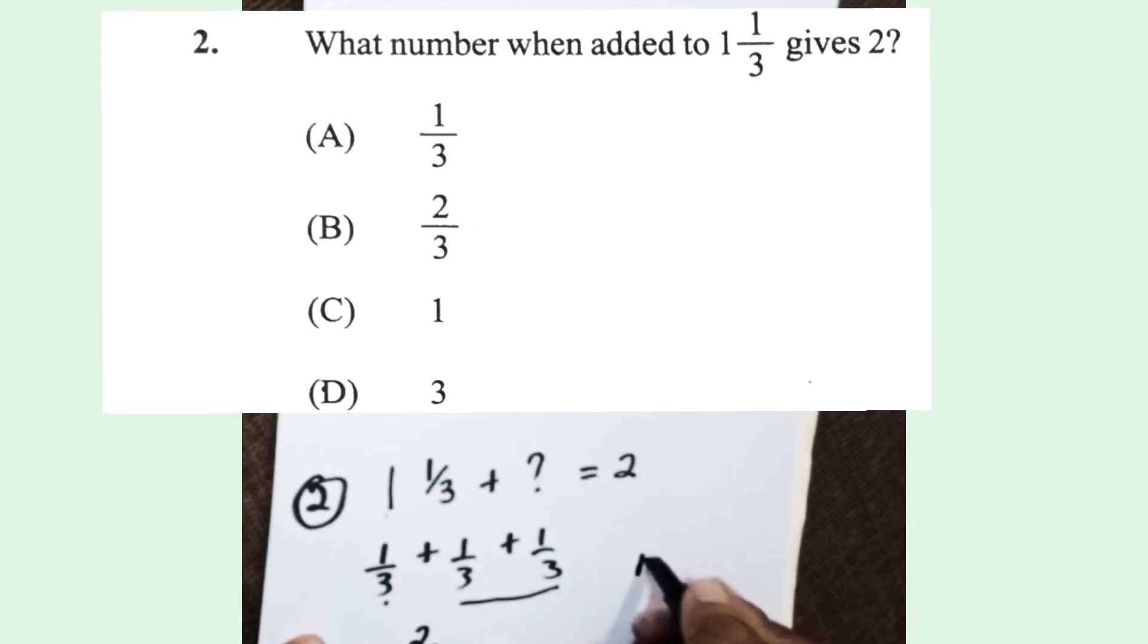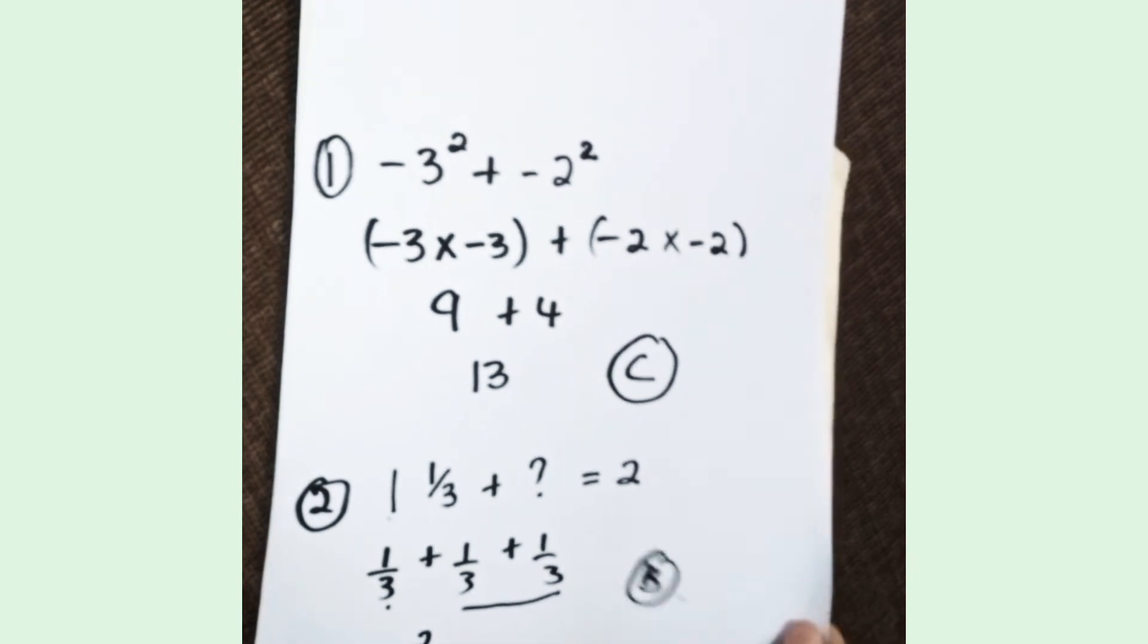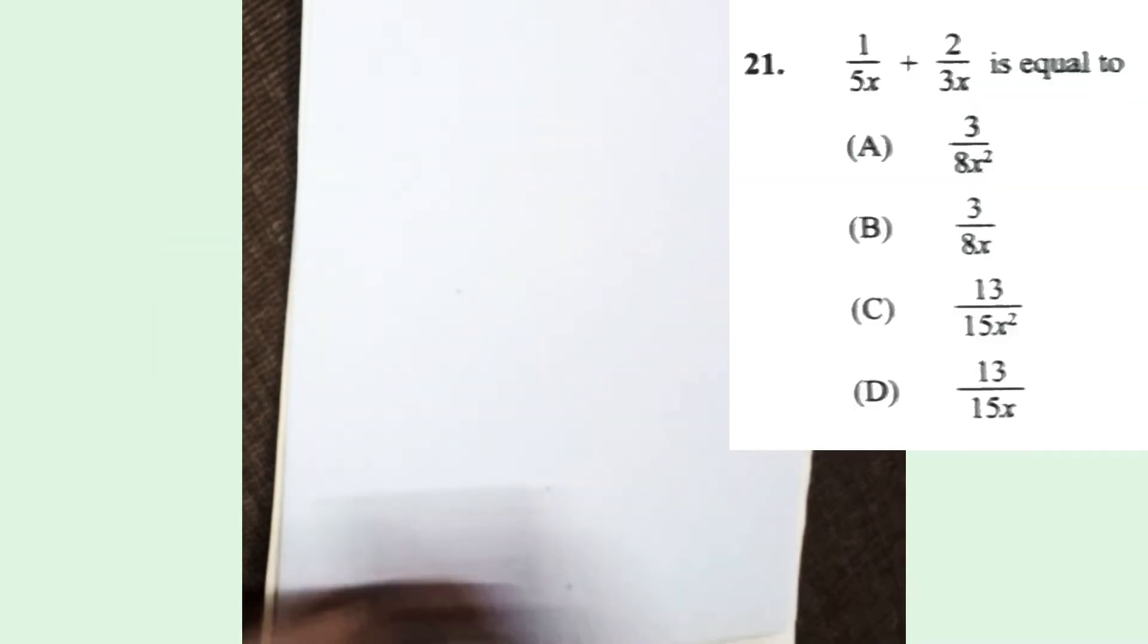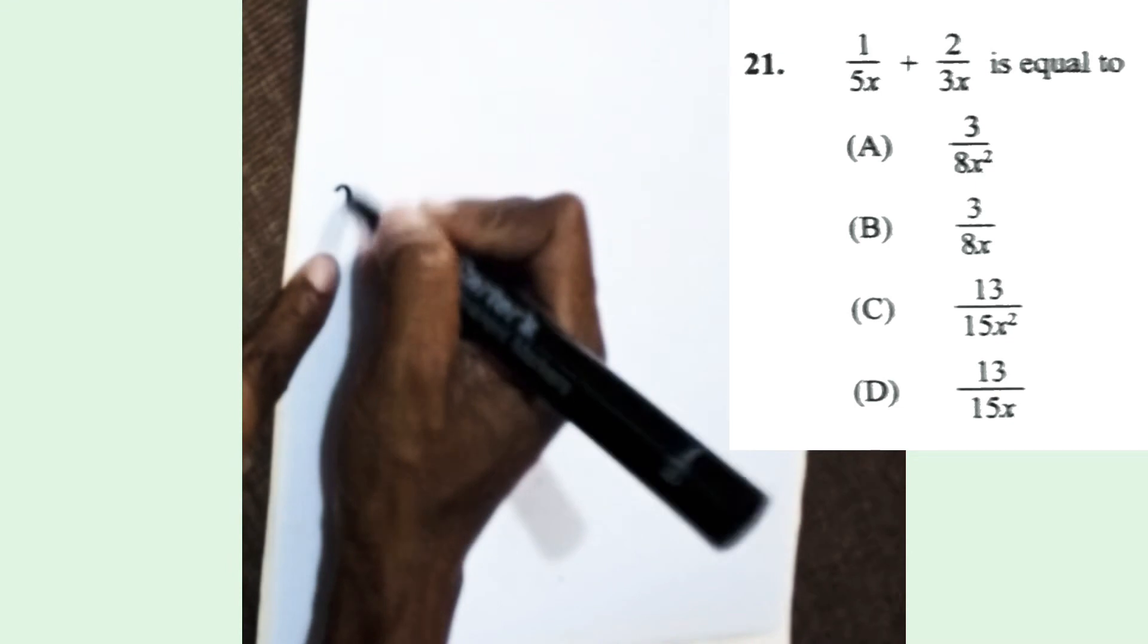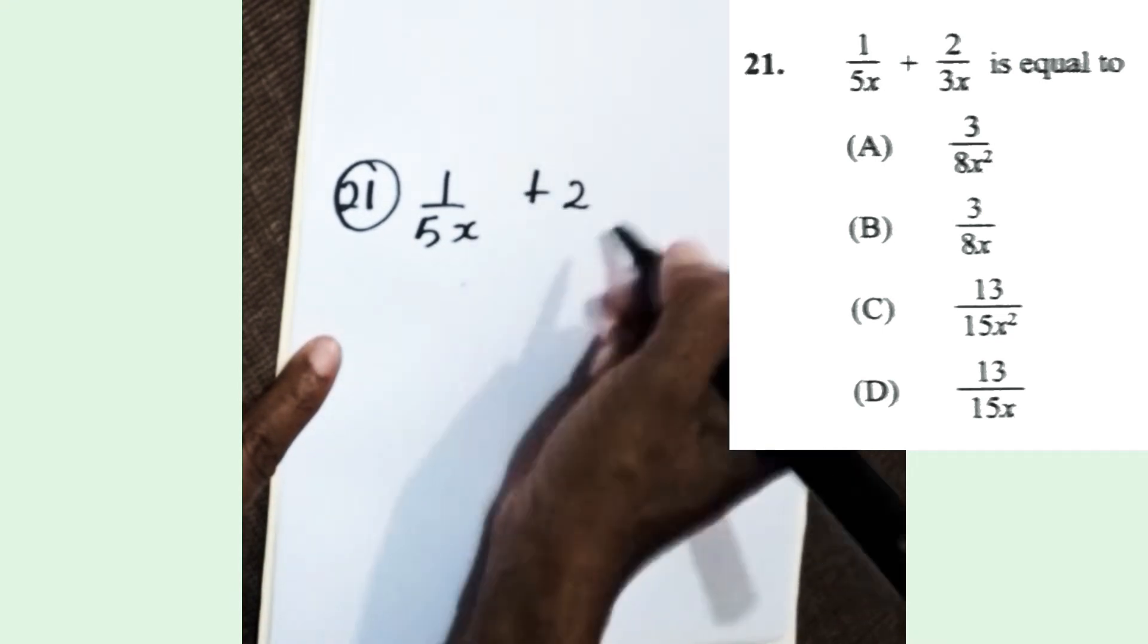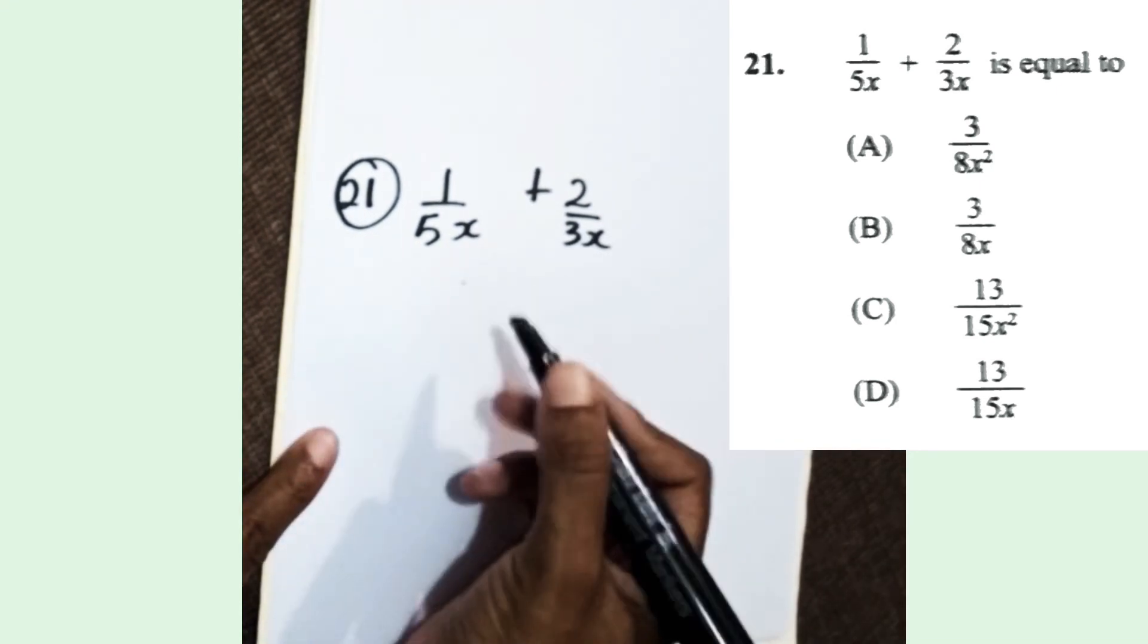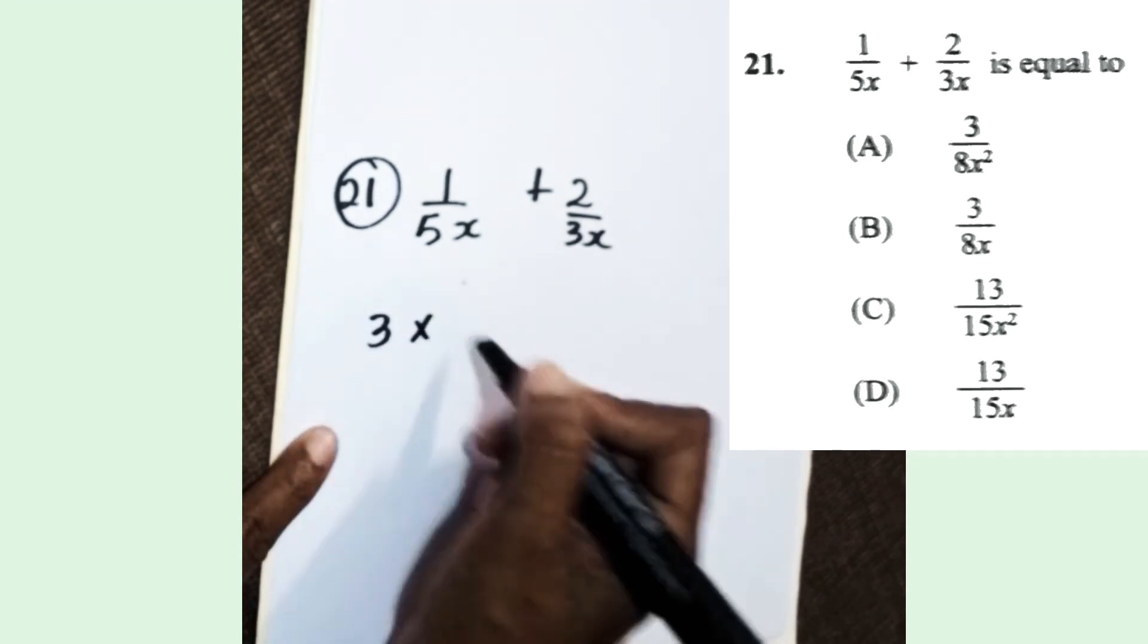All right, so we're going to look at the algebra questions now. We move up to question 21 from last year's paper. It gives two fractions; the denominators are both x terms. All you need to do is change the denominators to make them the same.